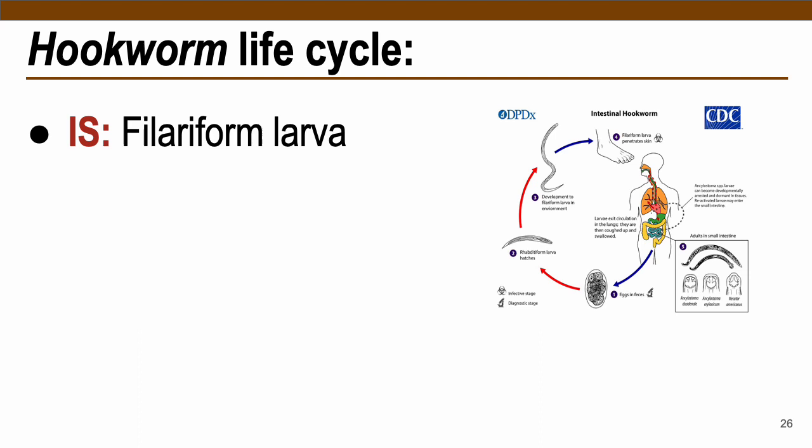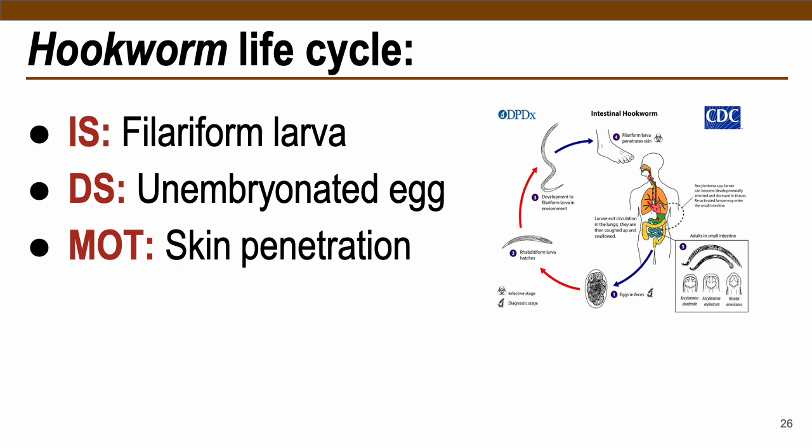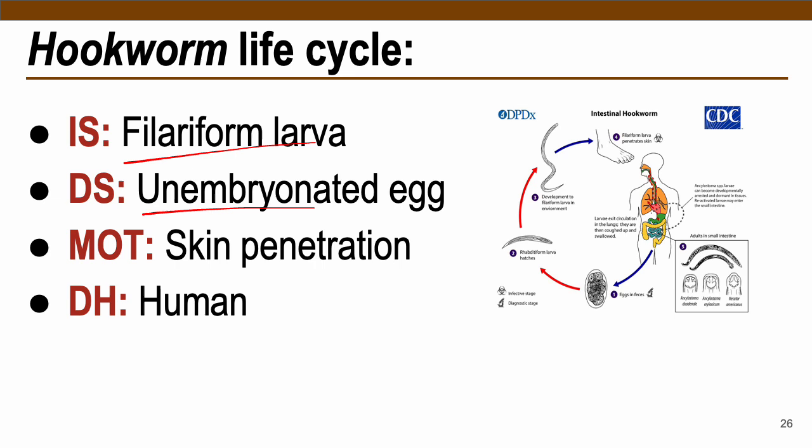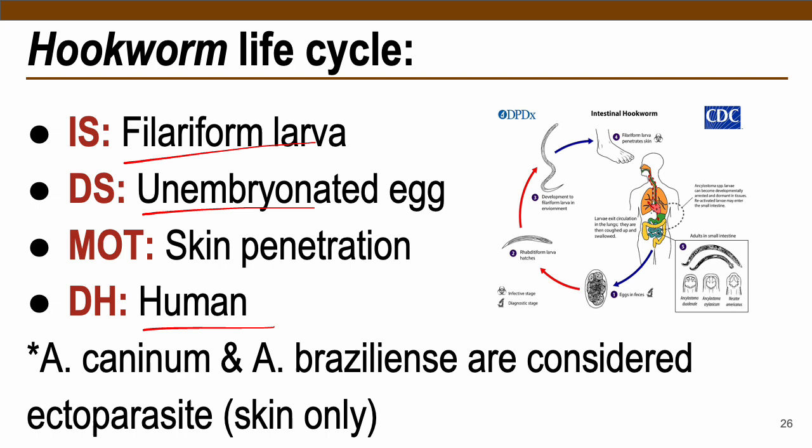For hookworm life cycle, the infective stage is filariform larva. Instead of ingesting eggs, hookworm infection is initiated by skin penetration of filariform larva — for example, walking on infected soil without shoes or sandals. The diagnostic stage is unembryonated egg viewed under the microscope. Humans are both definitive and intermediate hosts.